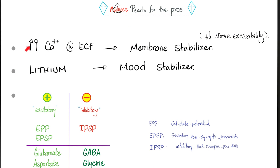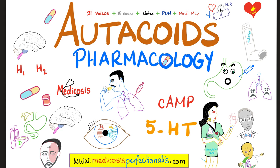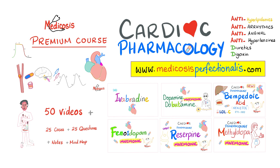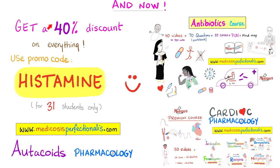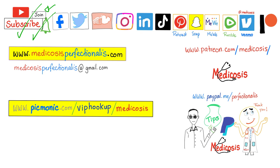Some pearls: hypercalcemia is a membrane stabilizer (high calcium = low excitability), while lithium is a mood stabilizer. Three important concepts: the end plate potential (EPP), the excitatory post-synaptic potential (EPSP), and the inhibitory post-synaptic potential (IPSP). EPP and EPSP are excitatory; IPSP is inhibitory. Key neurotransmitters: glutamate and aspartate are excitatory; GABA and glycine are inhibitory. Check out the pharmacology courses at medicosisperfectionitis.com using promo code 'histamine' for 40% off.